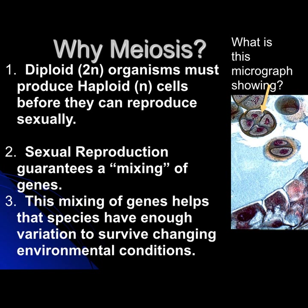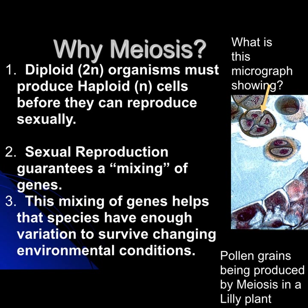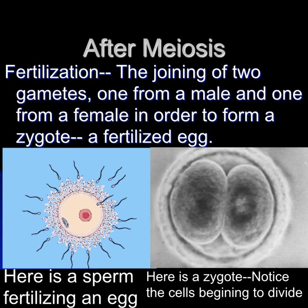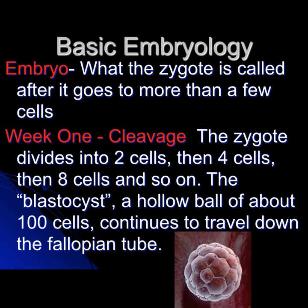This micrograph is showing pollen grains being produced by meiosis in a lily plant. After meiosis, fertilization occurs — the joining of two gametes, one from the male and one from the female — to form a zygote, a fertilized egg. An example is a sperm fertilizing an egg. Once fertilization takes place, that single cell has 46 chromosomes, and the zygote begins to divide as we start to develop into a new human.